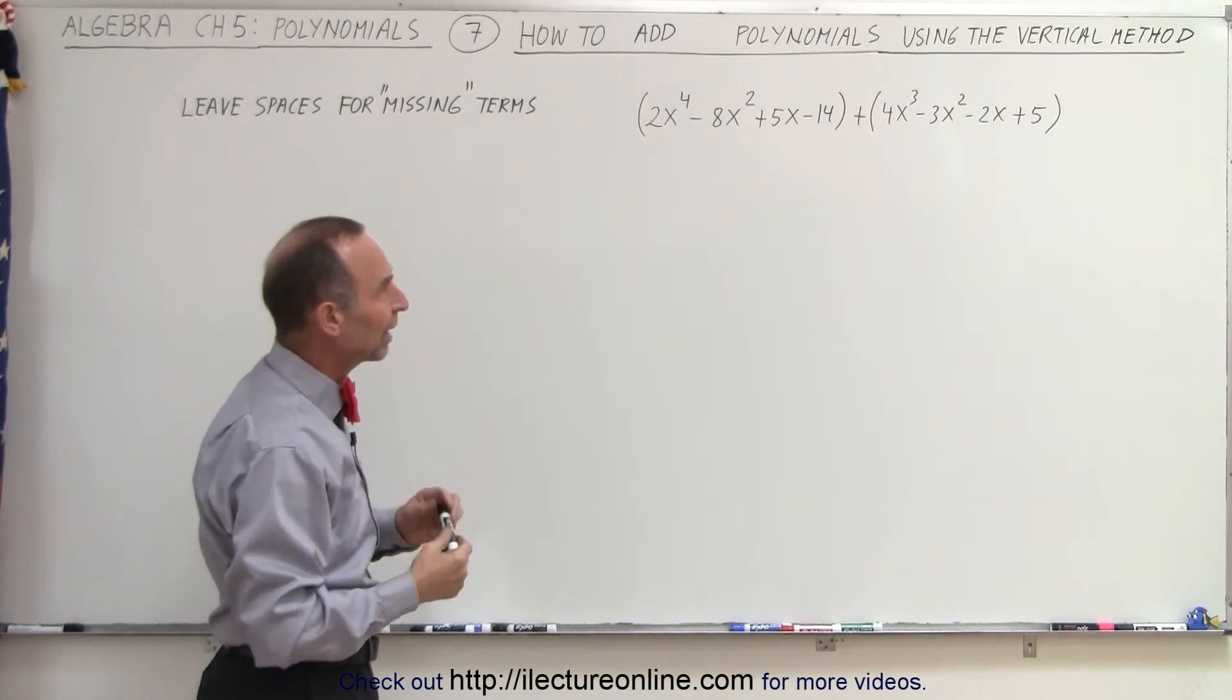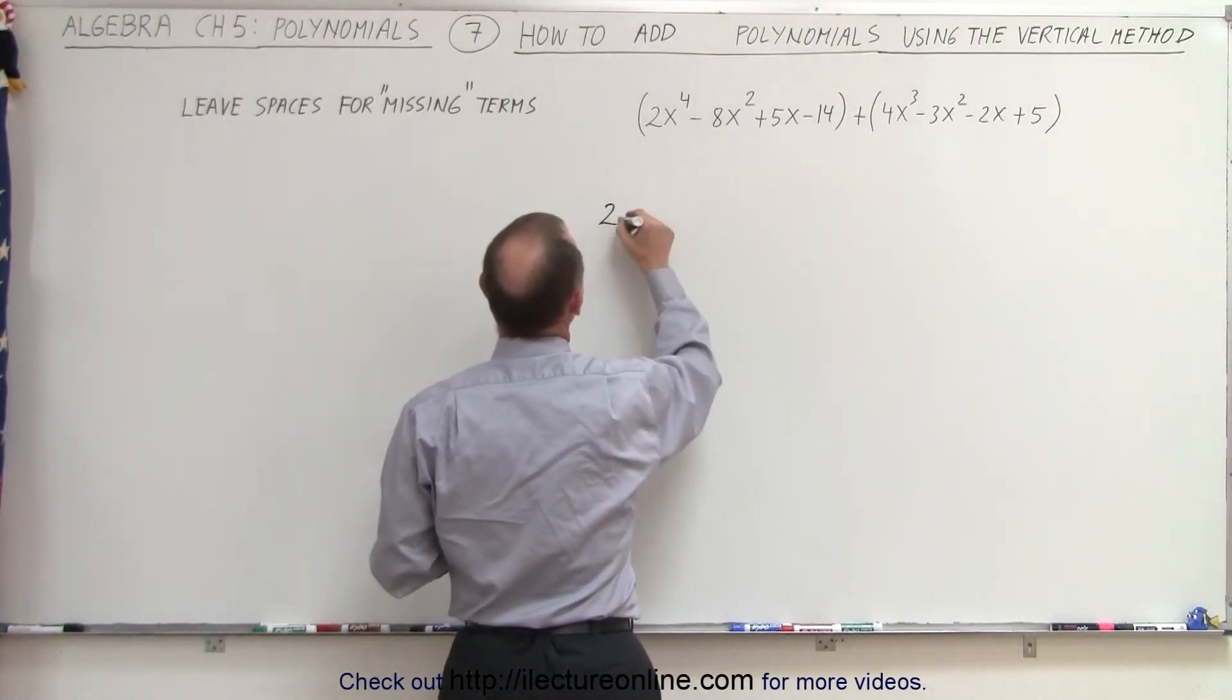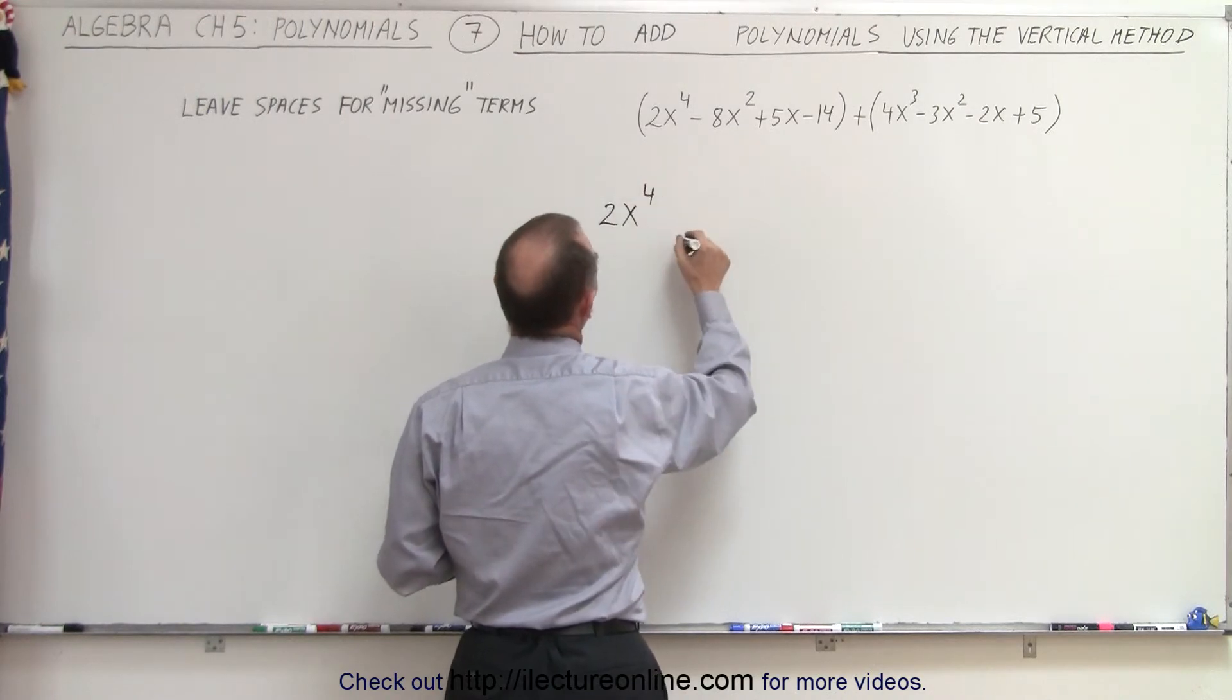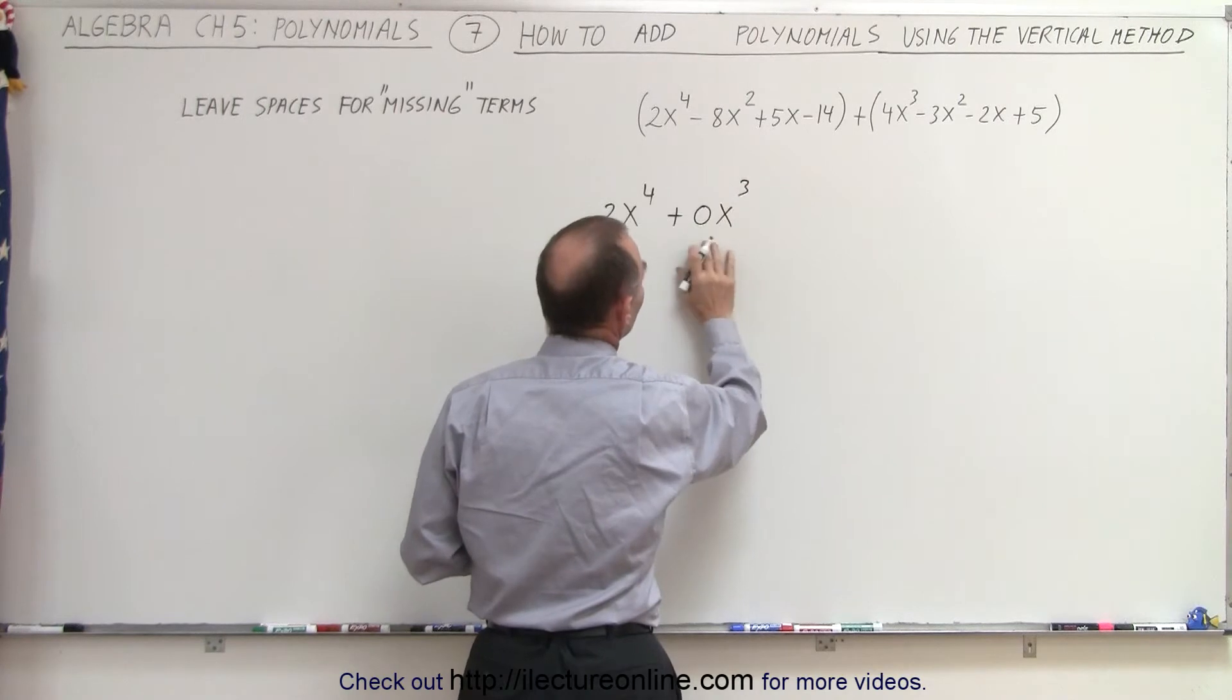If we do that, we get something that looks like the following. We end up with 2x to the fourth. We can say plus 0x cubed, if that helps, that's kind of a placeholder.